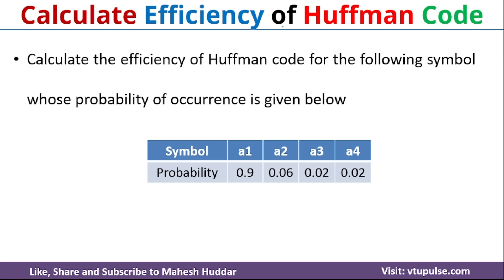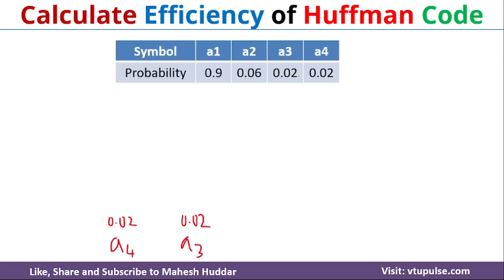To find the efficiency of Huffman coding, first we need to find the Huffman code for each of these particular symbols. So the next question is how to calculate the Huffman coding for each of these symbols. We have been given four symbols and their probabilities. What we do here is from these particular symbols, we will select two symbols whose probability is minimum.